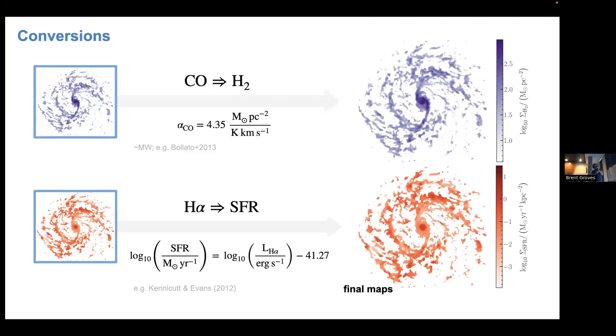For the H-alpha luminosity that comes from HII regions that are related to recent star formation, we can infer the star formation rate through this conversion formula here. So now that we have both the star formation rate surface density and H2 surface density maps, we can populate this Schmidt-Kennicutt plane.